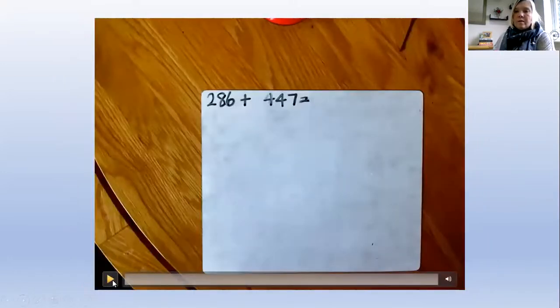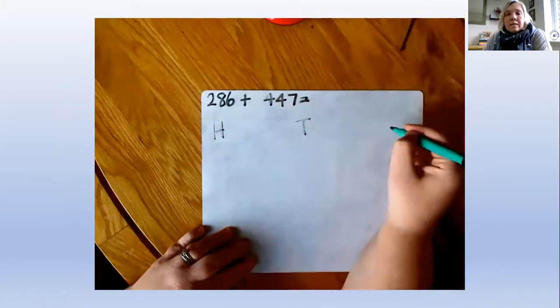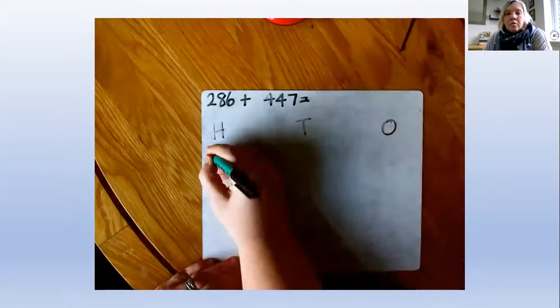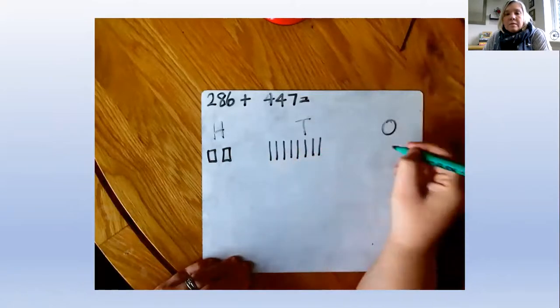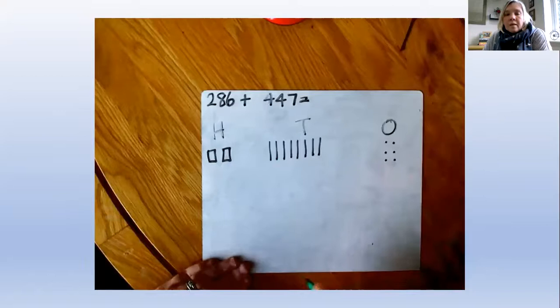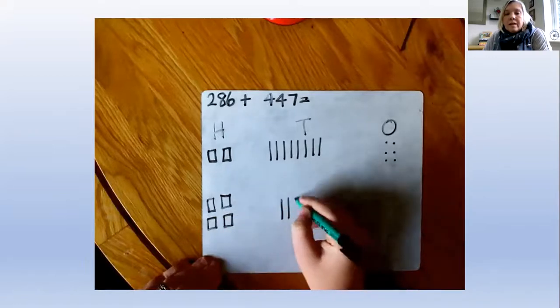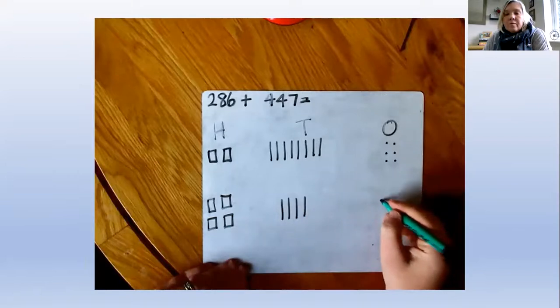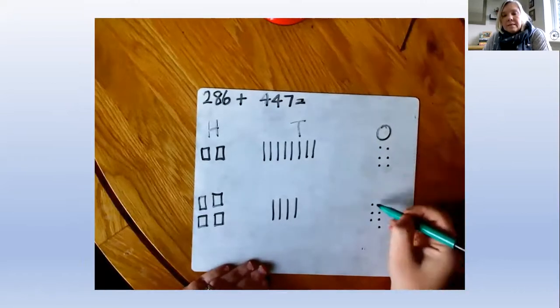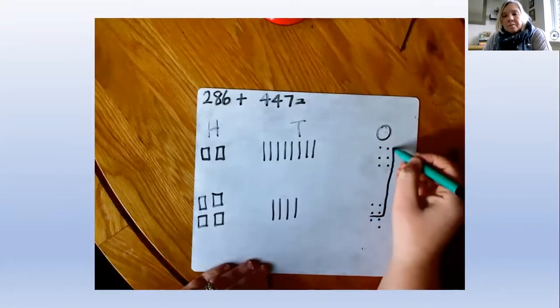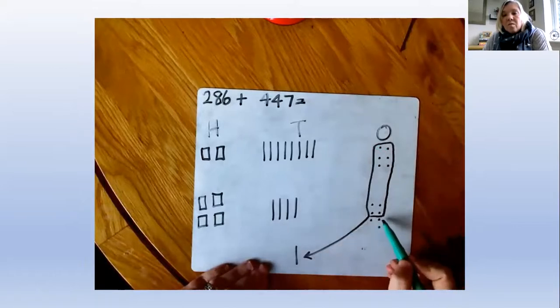Okay, and here is me using the pictorial again to show you how to do that. My 100s, 10s and my ones. 200 and 80, that's 8 tens, 6, and 400, and 40, 4 tens, 7 ones. First of all adding my ones: 6, 7, 8, 9, 10. So I'm going to regroup those 10 and exchange it for 1 ten. I've now got 3 ones left.